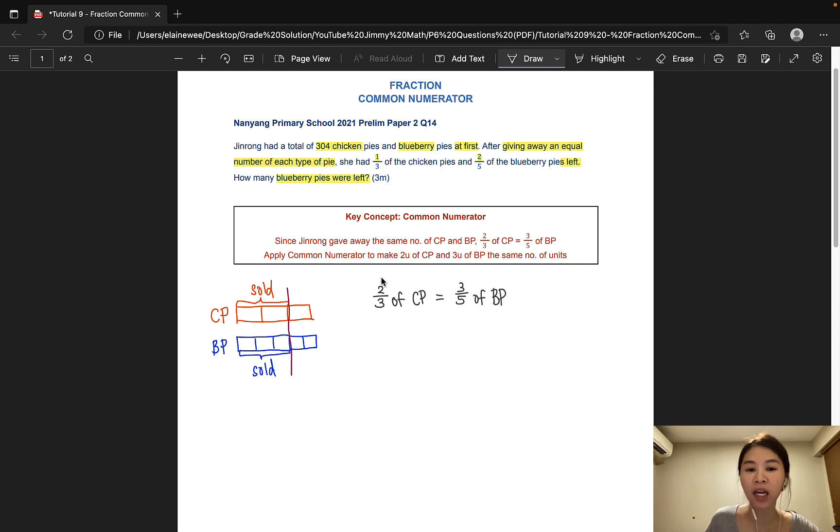Two units here is the same as three units here, but it is not the same, isn't it? So we want to make them the same. Therefore, common numerator.